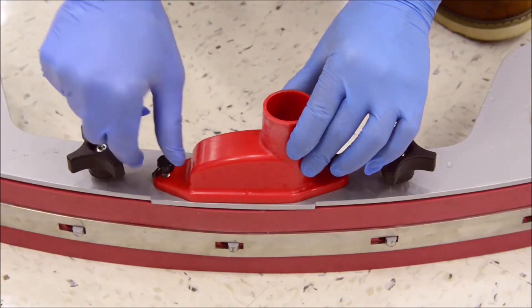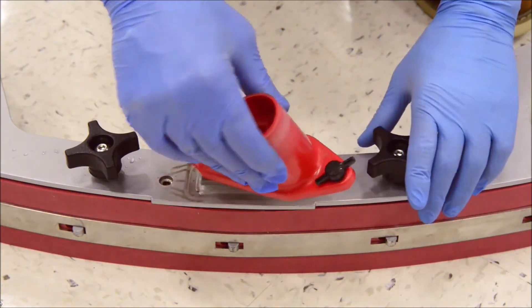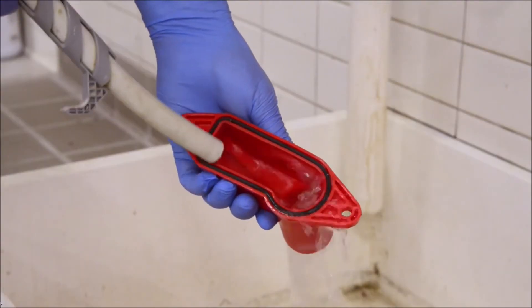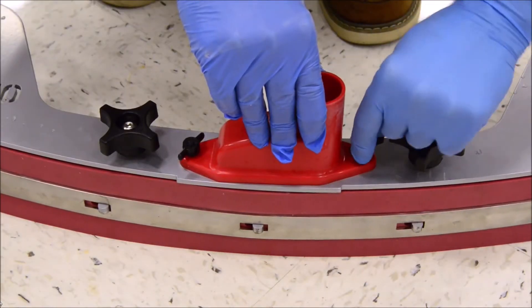The final step to cleaning the squeegee is to inspect the drip trap. Loosen the wing nuts and detach the drip trap. Remove any debris by rinsing with the hose. Once complete, reinstall the drip trap onto the squeegee assembly.